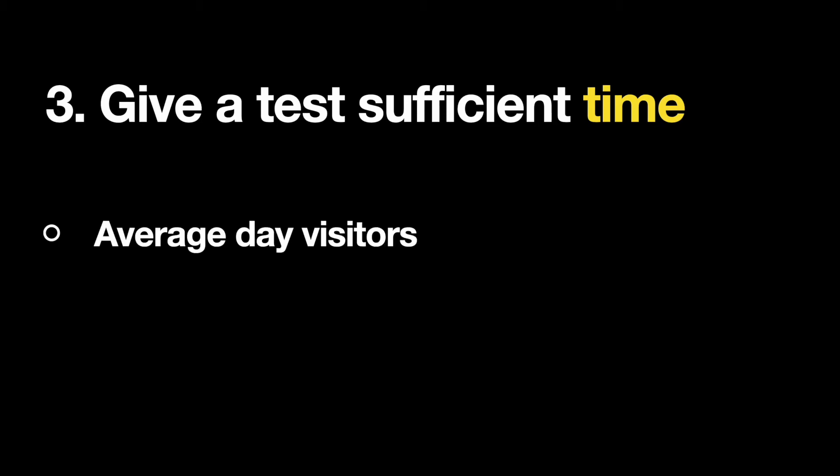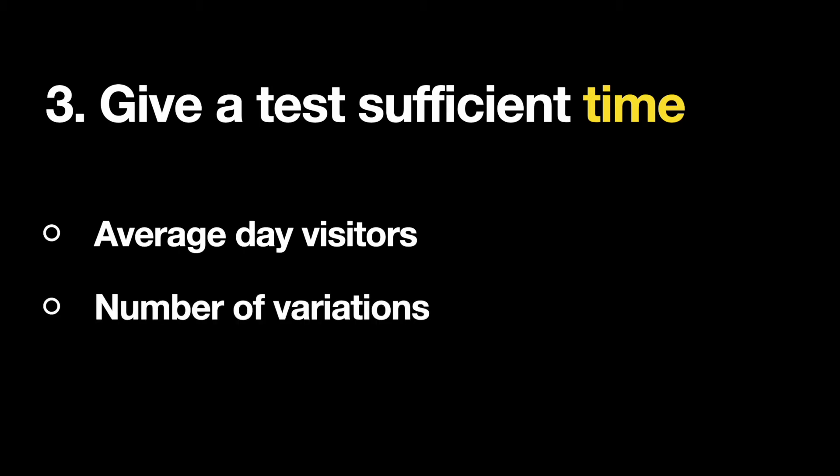Number three: give each test sufficient time. Not giving each test sufficient time is a typical problem many product teams face. When the time is too short, A-B testing will have a limited number of test participants and non-representative results. The time for testing can be calculated based on two variables: average daily visitors — the number of unique daily visitors your tested page receives, for example ten thousand — and total number of page variations, for example three versions of a landing page. It's a good idea to use those parameters as input for an A-B test duration calculator, which will give you the number of days required for running the test.